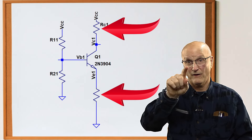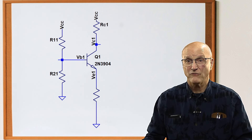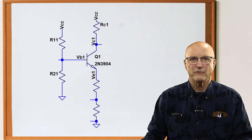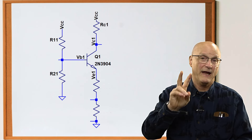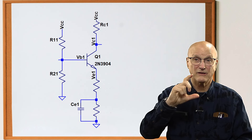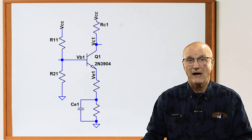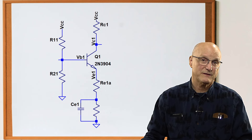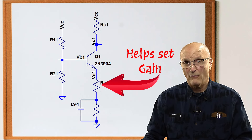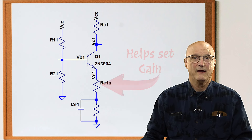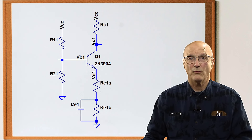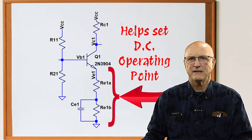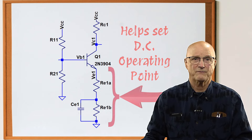We are going to have to be able to control the gain independently of other factors. So I am going to split my emitter resistor into two pieces and then add a bypass capacitor across the lower of the two. I will call the top emitter resistor RE1A, because it's the first emitter resistor on the first transistor stage — this is the one that will help set the gain of the amplifier. I will call the bottom emitter resistor RE1B because it's the second. This one, along with the one above it, helps set the DC operating point of the transistor stage.